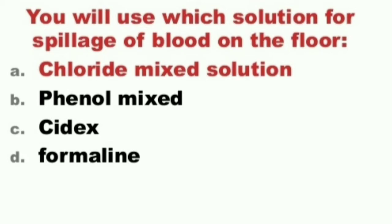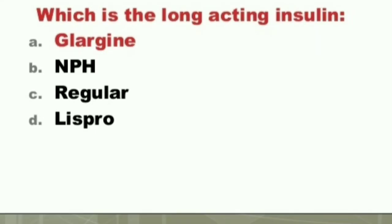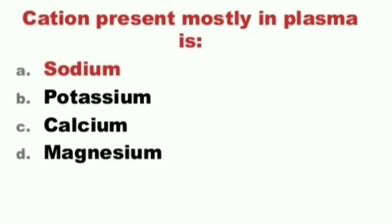Next question: Which is a long-acting insulin? A) Glargine, B) NPH, C) Regular, D) Lispro. The answer is A) Glargine. Glargine is a long-acting insulin.